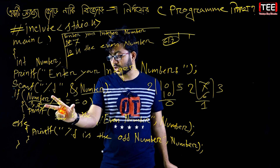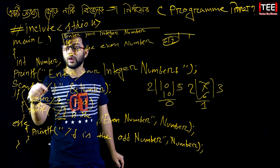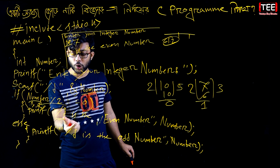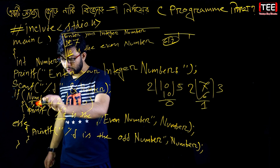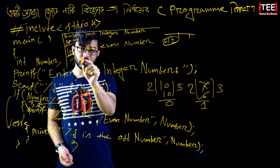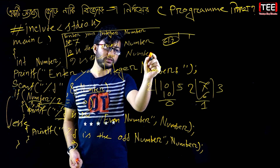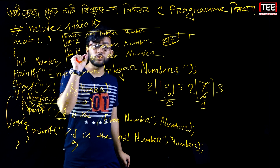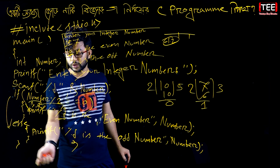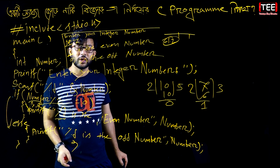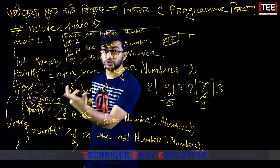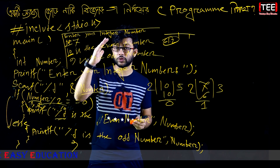Is 1 equal to 0? No. False is equal to 0 — so false means the remainder equals 0 condition is false. False is false. Print is false. This condition is false. The output is: 9 is the odd number.